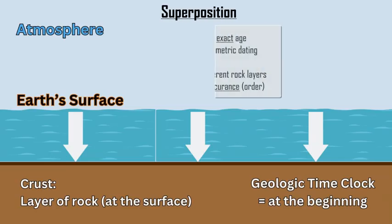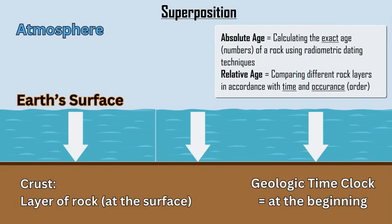Superposition is a geologic principle referring to the relative age of a rock layer. When you have a series of rock layers, you are determining their ages based on which one seems younger and which one seems older.